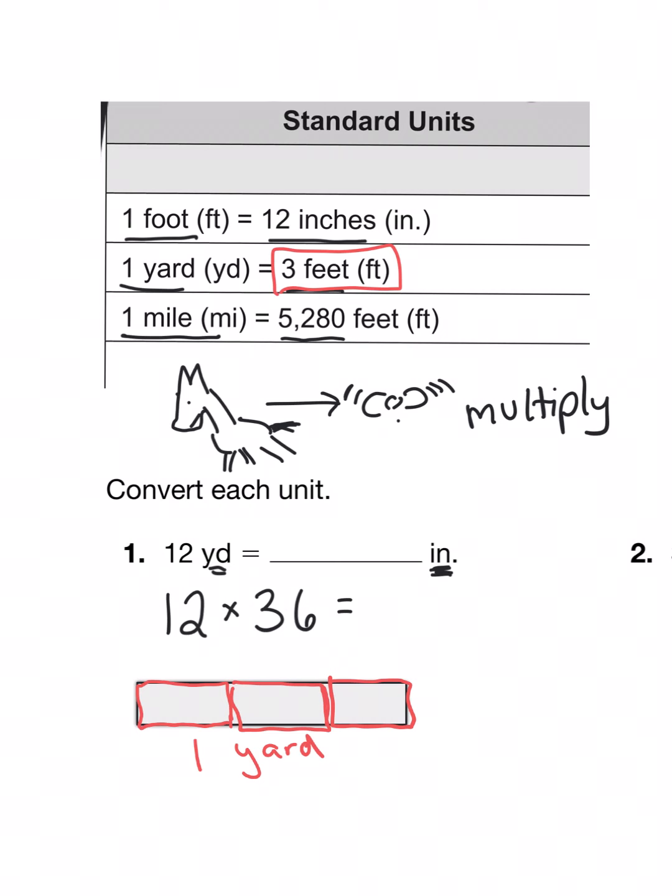Then it tells me that in each foot there are 12 inches. So this is 12 inches, this is 12 inches, and this is 12 inches. So as you can see in my one yard I have 12 inches, 24 inches, 36 inches. 12 times 3 is 36. So that's why I'm multiplying times 36 here.